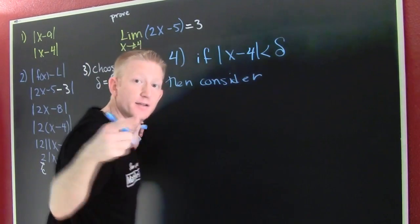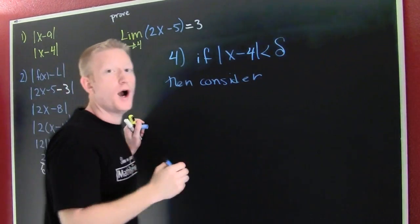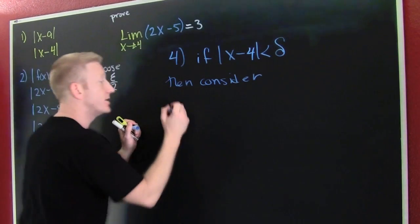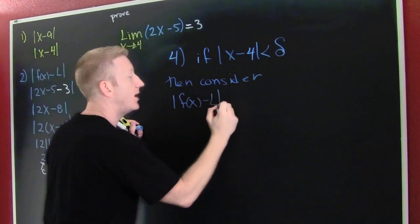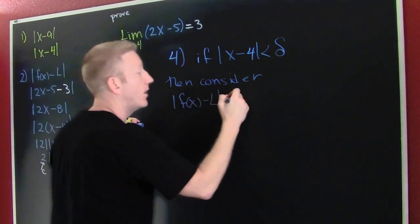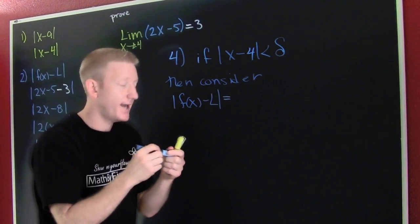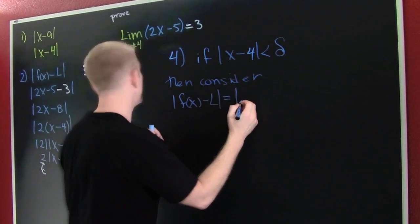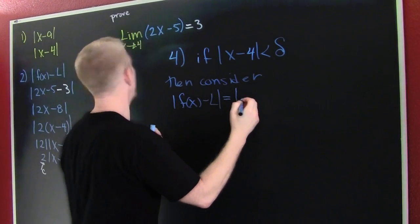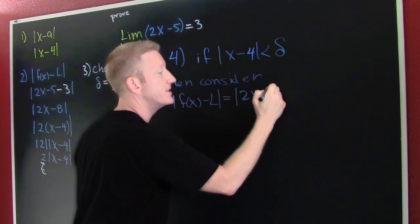Consider what? The function minus the limit. Why? Because we're trying to do an epsilon-delta proof. So we're going to consider f(x) minus L. Yes, well in our scratch work we had this, and we said that this is the absolute value of 2x minus 5 minus that 3.